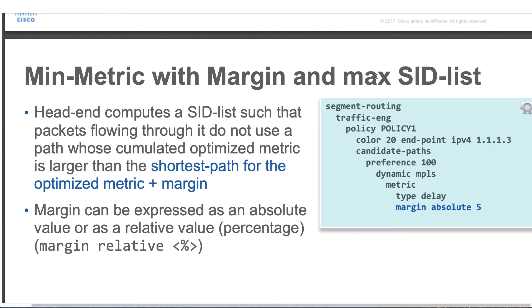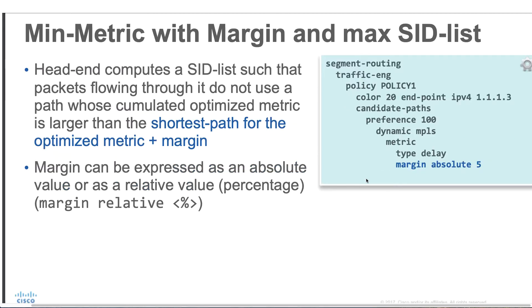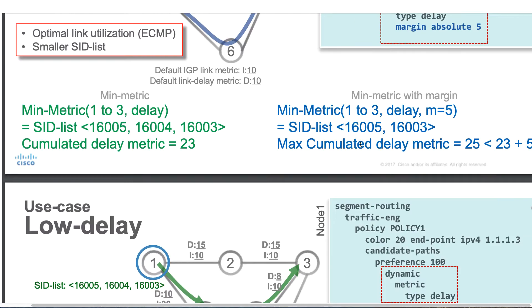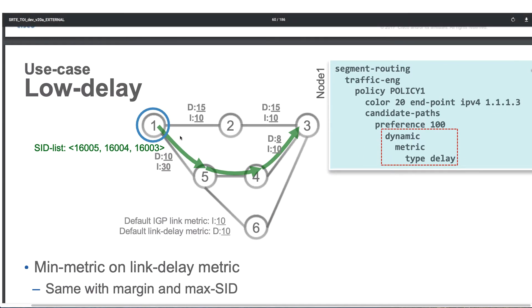We can also say that when traversing, the metric type is delay — meaning pick the path with the lowest delay on those links. For example, in the case of low delay: the top path between 1, 2, and 3 has a delay of 15 for the first link and 15 for the second. But the link between 1 and 5 has a delay of 10, and between 4 and 3 it is 8. So from a delay metric perspective, the green path is the valid path. If we set the metric type to delay for our policy, it will pick this green path.